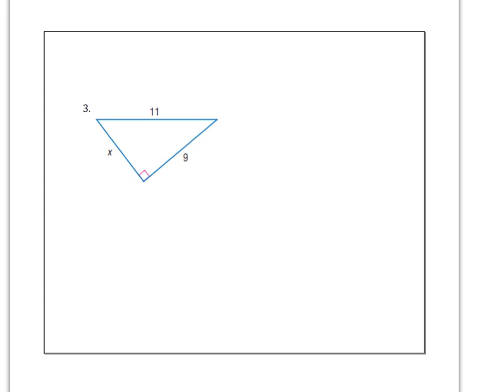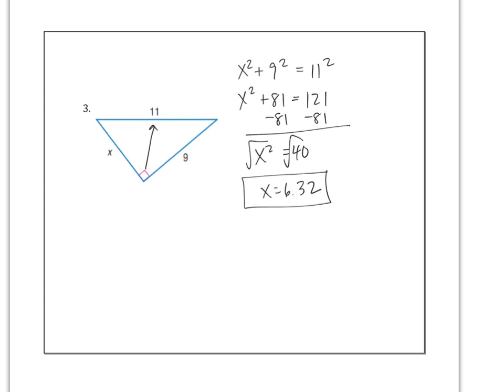So take a minute, see if you can set up number three. Now remember, your c has to be across from the 90 degree angle. So you should have x squared plus 9 squared equals 11 squared. It's okay if you switched around the x and the 9, but the 11 has to be your c. So it's x squared plus 81 equals 121. Then subtract your 81. x squared equals 40. And then you have to take the square root of 40. I'm typing it in my calculator here quick. And I got x equals 6.32. It makes sense that it is shorter than 11.